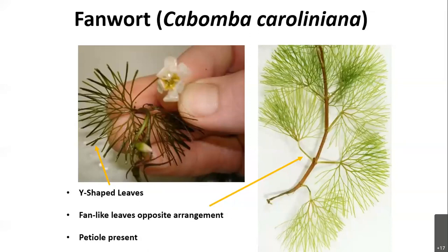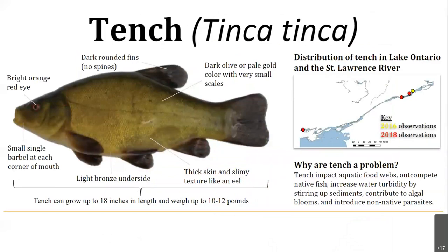Tench are a freshwater fish native to Europe and western Asia, intentionally introduced through the aquaculture trade in many parts of the United States and Canada. Tench have been present in the St. Lawrence River and Canadian waters for some time, but have been cited in the past couple of years within SLILO boundaries. Tench inhabit weedy, muddy water bottoms, have high reproductive rates, long lifespans, and can survive in low-oxygen environments. They are generalist predators whose diet includes fish eggs, snails, and other invertebrates, putting them in direct competition with native fish species. They can diminish aquatic food webs, increase water turbidity, and introduce non-native parasites into the Great Lakes.